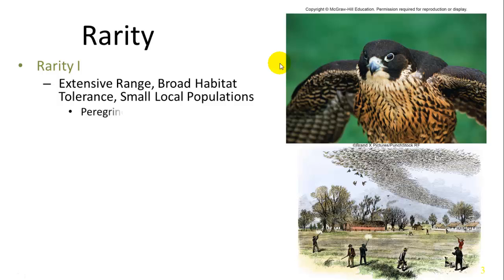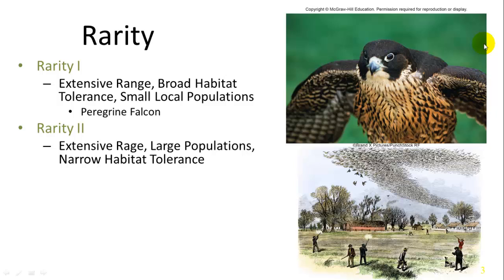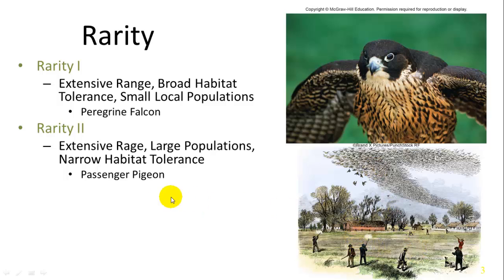The peregrine falcon fits the description of rarity type two: extensive range and large populations but narrow habitat tolerance. The passenger pigeon is another example — it was the most abundant bird in the United States at colonization, but had narrow habitat tolerance. It was only found in very specific areas, which made it easy to hunt, and it was driven to extinction.